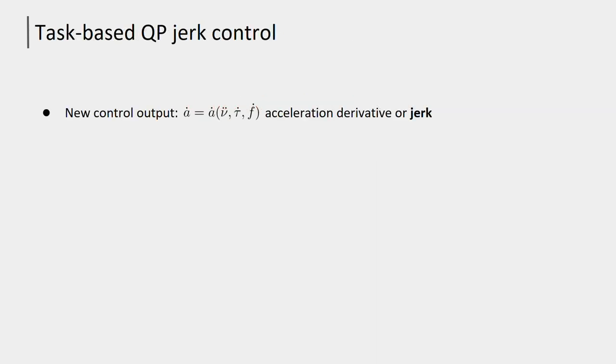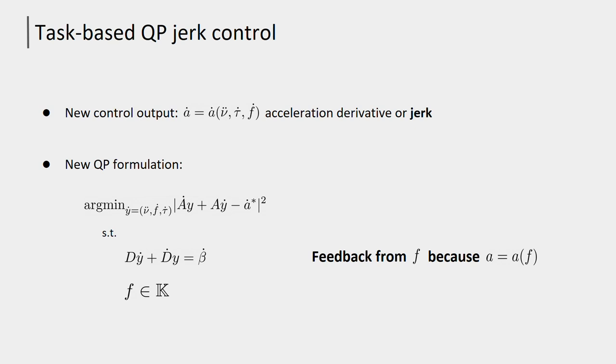To overcome the above-mentioned limitations, in the paper we write the control task in terms of acceleration derivative or jerk. In the language of automatic control, the jerk controller represents a so-called dynamical extension of the system dynamics, which allows us to consider the system acceleration, torques and contact forces in the system state and use it as part of the feedback.